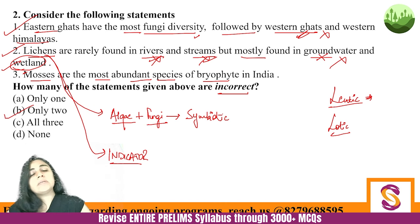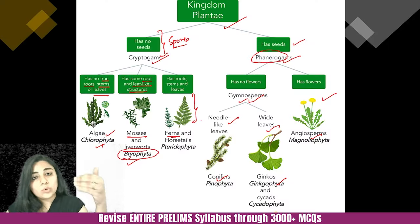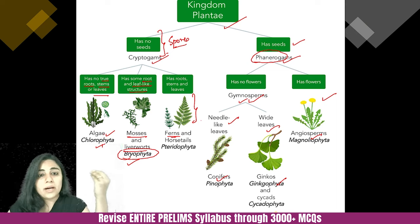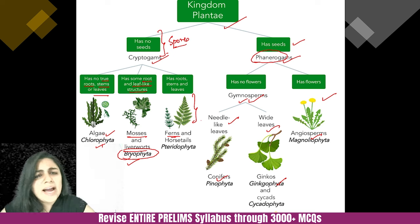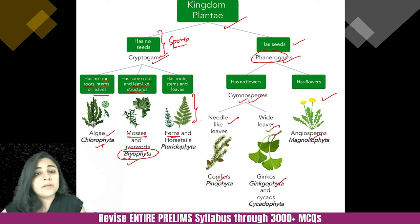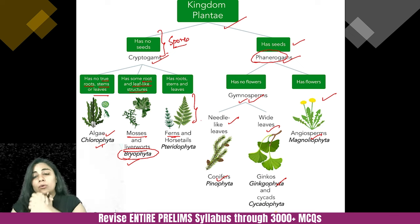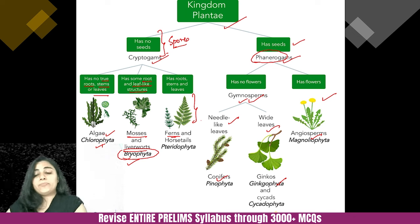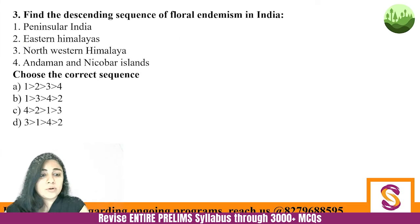Mosses are the most abundant species of bryophytes in India — this is actually correct. We just studied that bryophytes come just after algae, and mosses are definitely the most abundant of those species. So here, only two statements are incorrect, making B the answer. You now have a broad overview of the plant kingdom. When we study science and tech, we'll revisit the plant kingdom from a biology perspective. You don't need to be from a science background to understand this for UPSC level.